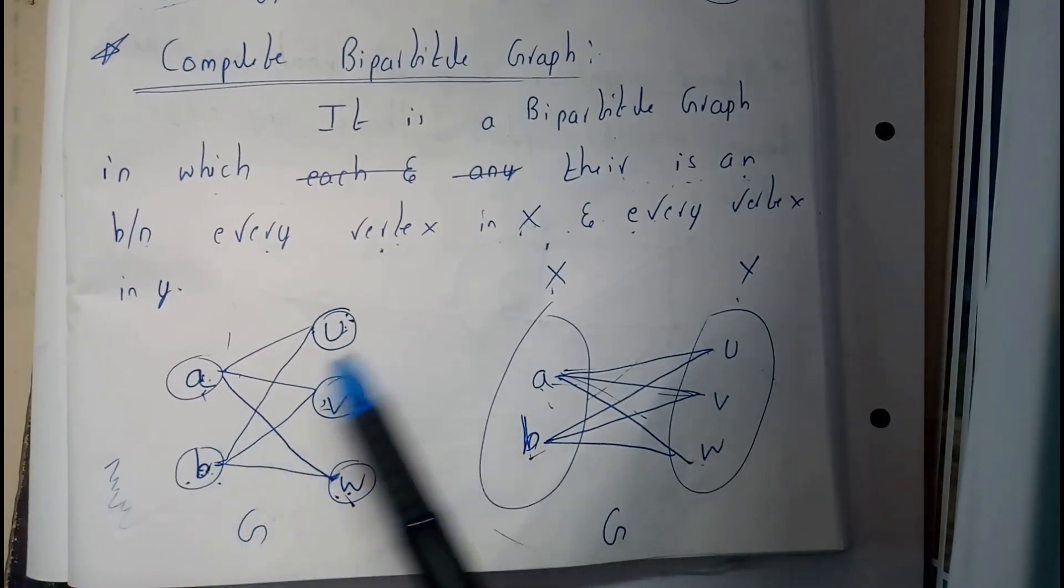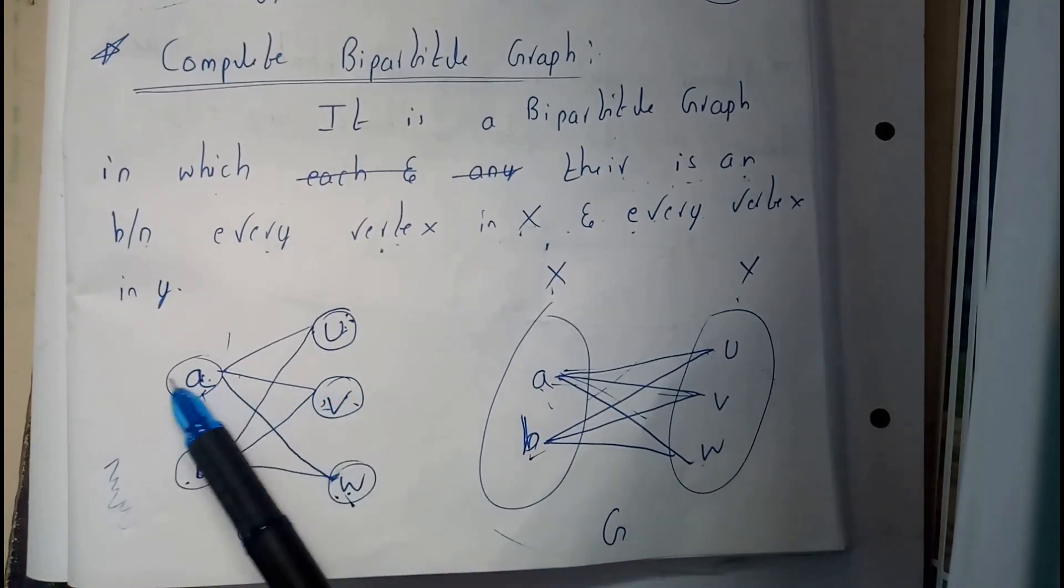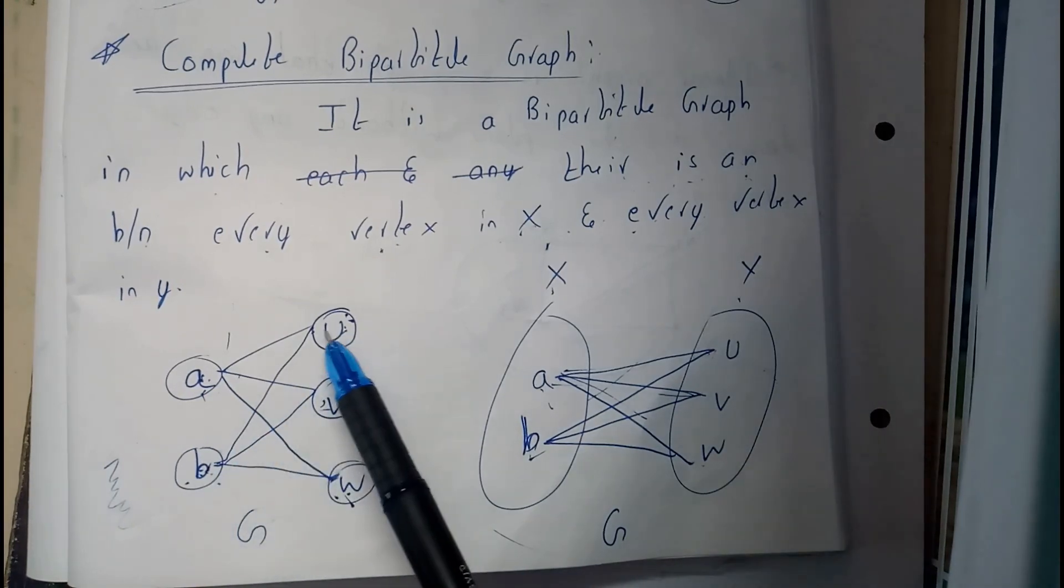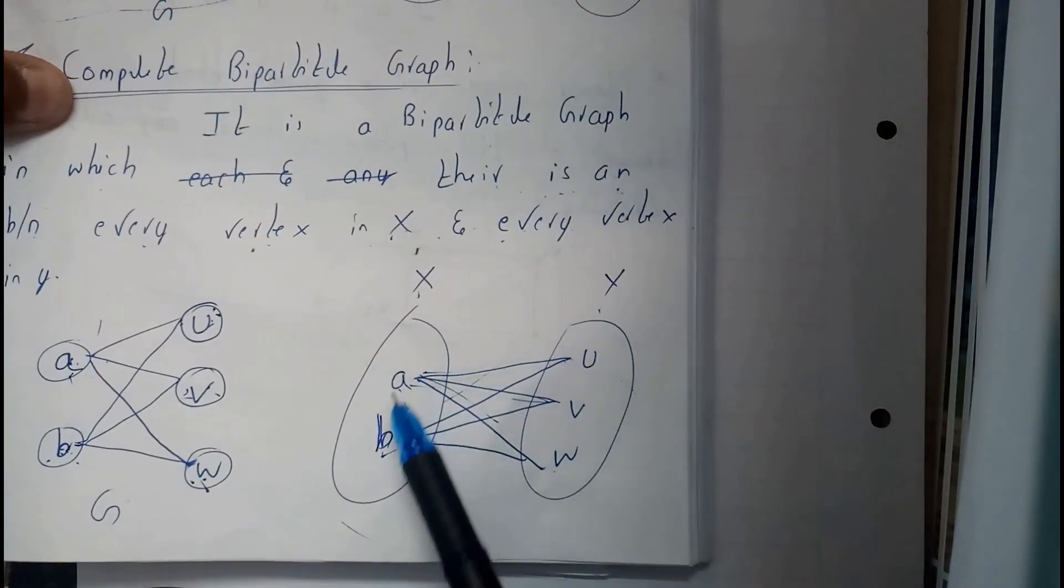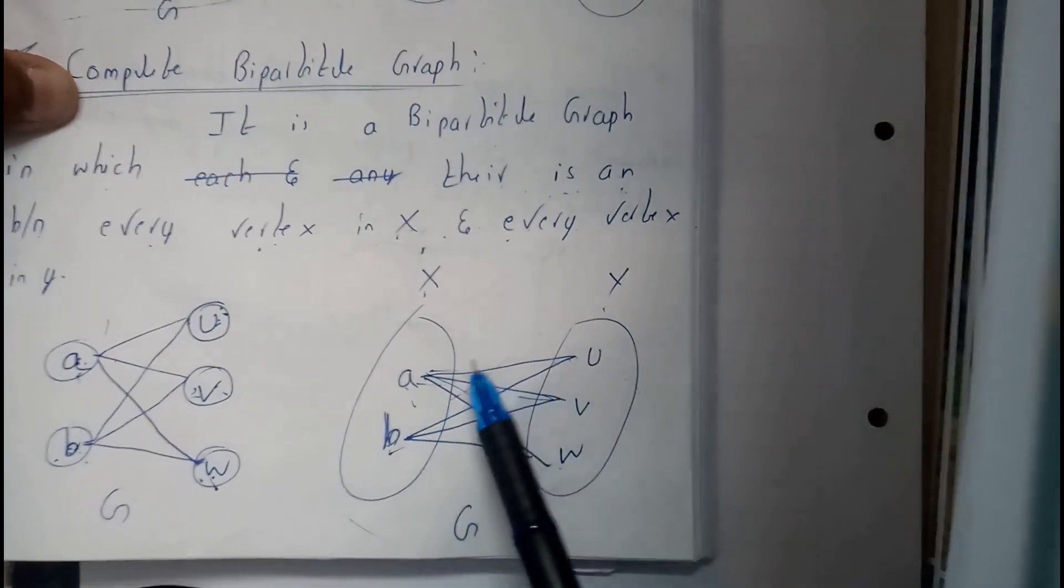As an edge between a to u, a to v, a to w, b to u, b to v, b to w, then it is called as a complete bipartite graph. See here in this diagram we can clearly say we are having a combination...